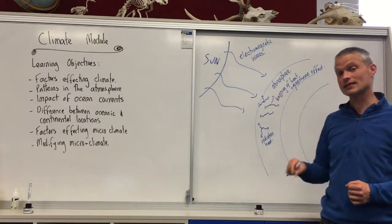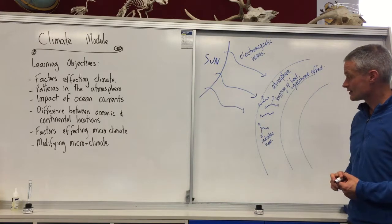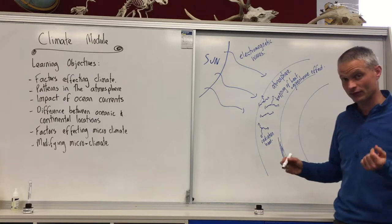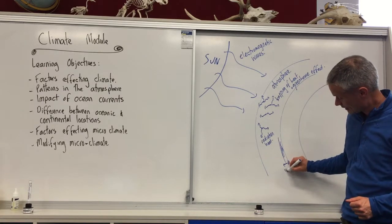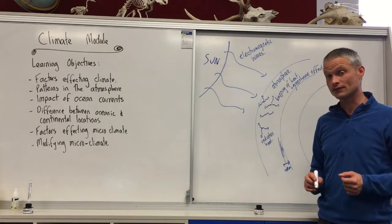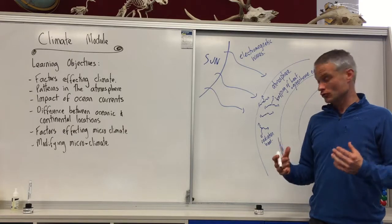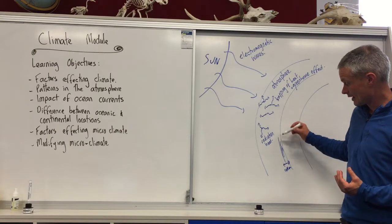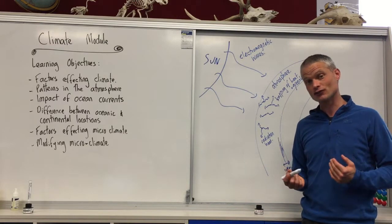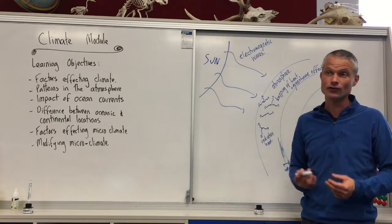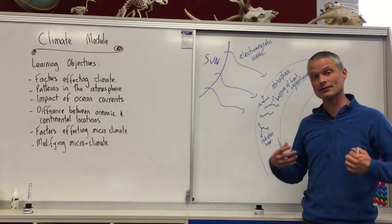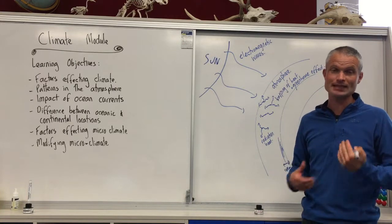The layers of the atmosphere closer to the earth — within the first 10 kilometres in the troposphere — are the thickest layers and are able to absorb the most heat, therefore trapping the most warmth close to the surface. This is beneficial for supporting life on earth; otherwise it would be too cold for plants to photosynthesize and for animals to support their metabolism.